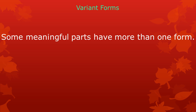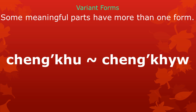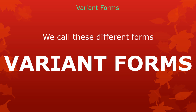As you may have noticed already, some meaningful parts have more than one form. For example, some people say 道对 and others say 道地. Some people say 天空 while others say 天空. Sometimes somebody will say 沆水がぼ one way and sometimes another way. We call these different forms of a meaningful part its variant forms.